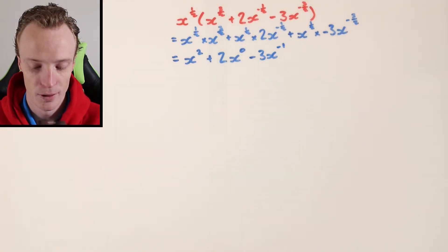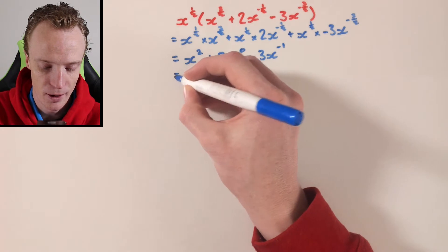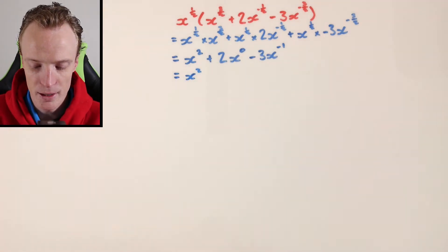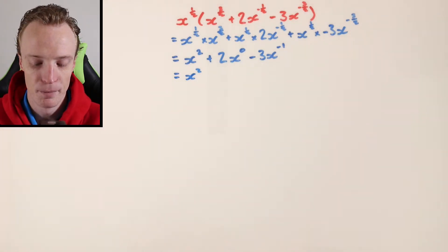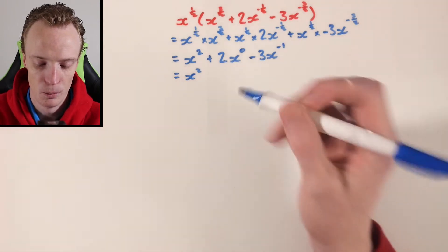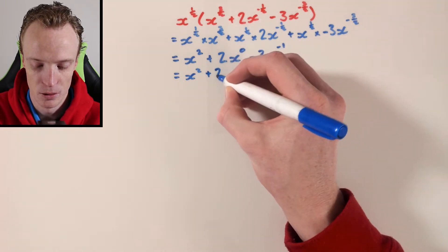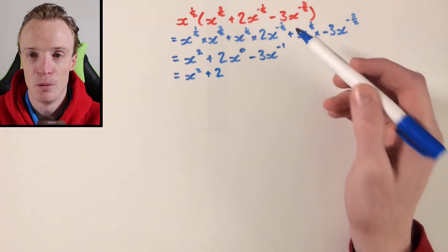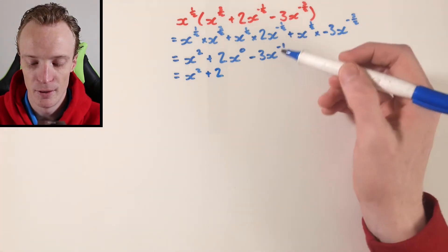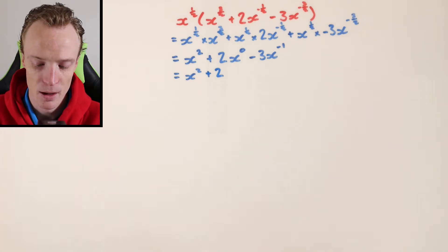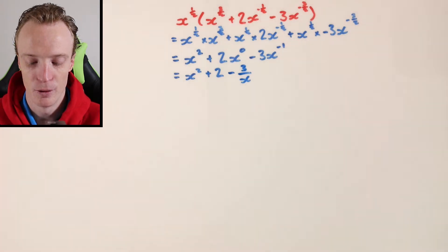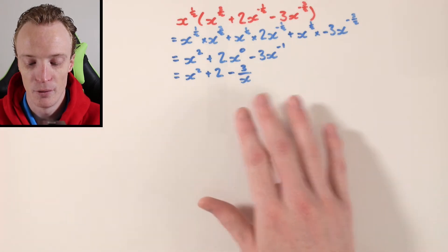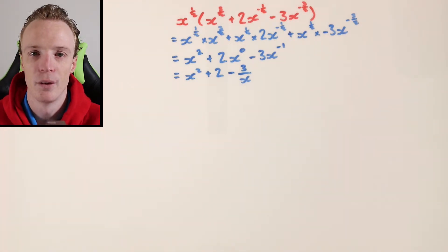From here I can continue to simplify. The first one is just x squared. The next one — x to the power of 0 — anything raised to the power of 0 is equal to 1, so this is 2 times 1, which is just 2. And then with the negative index, that x needs to be flipped to the other side of the fraction, so this becomes subtract 3 over x. Now you can see I've expanded the brackets and simplified using my index laws.